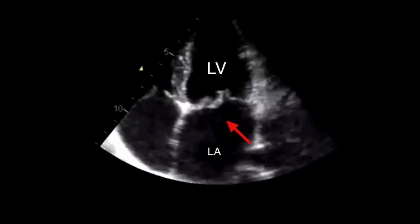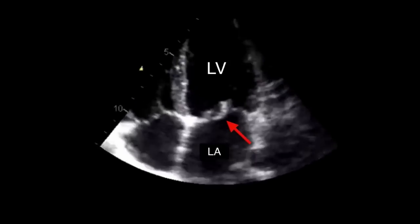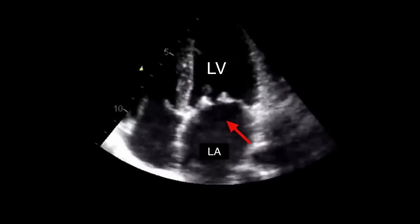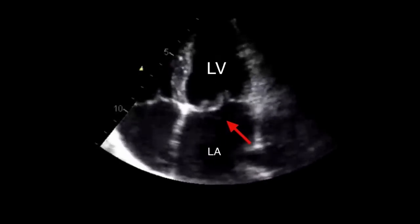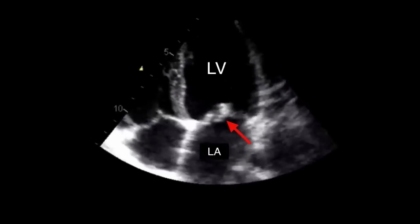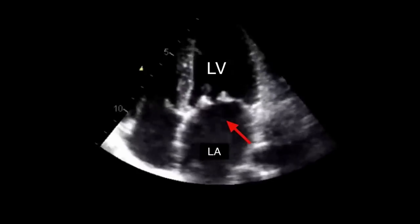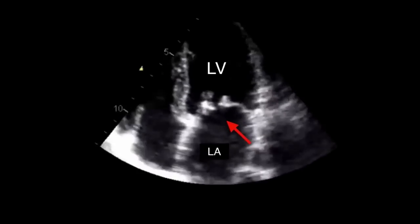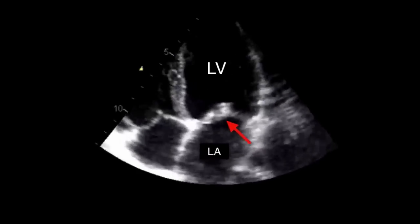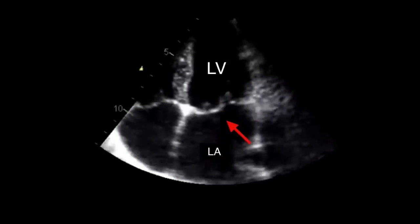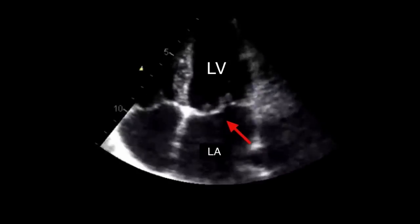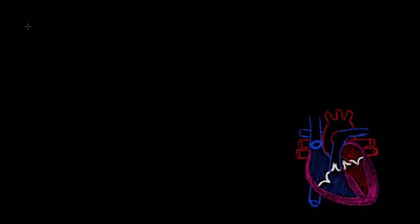What you're looking at here is an ultrasound, or what they call an echo of the heart. You can see the four different chambers — I've labeled the left ventricle and left atrium. The arrow is pointing to the valve in between the left ventricle and left atrium, which is the mitral valve. That valve is actually not opening, and when that valve is really tight or doesn't open, that is called mitral stenosis.